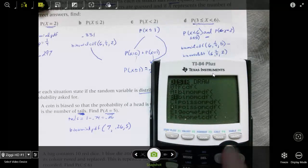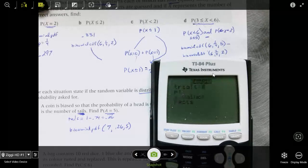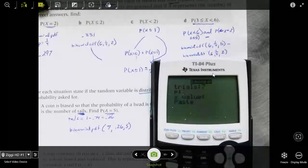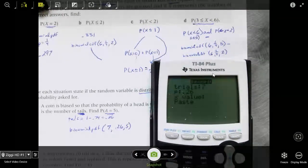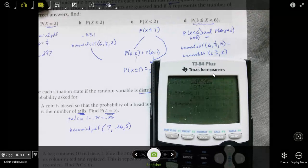Keep going here. A bag contains 10 red dice, 1 blue die, and 7 yellow dice. So there's 18 dice together. A die is selected at random, and its color is noted, and then it's replaced. This is repeated 12 times. If it didn't say replace, we couldn't do it. If it said took it out, then it's a more complicated question.